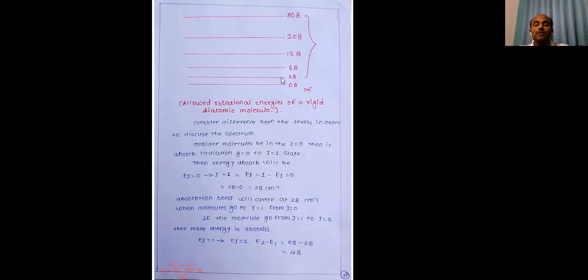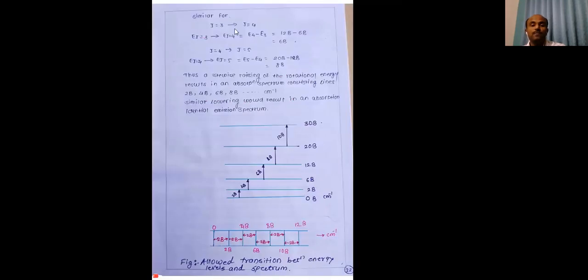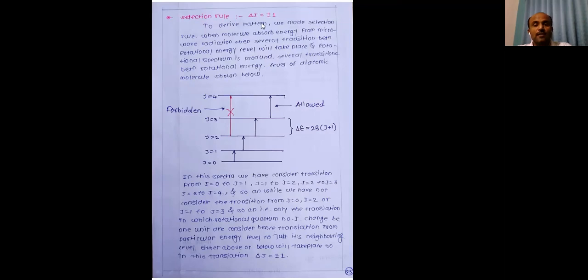Similarly, the difference between j=1 and j=2 is 4B, between j=2 and j=3 is 6B, between j=3 and j=4 is 8B, between j=4 and j=5 is 10B, and so on. The differences between two adjacent energy levels increase as 2B, 4B, 6B, 8B, 10B. There is a selection rule for these transitions: ΔJ = ±1.